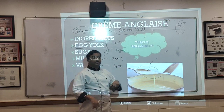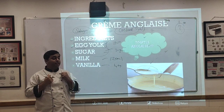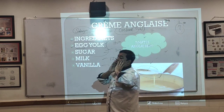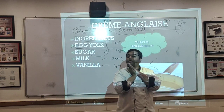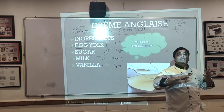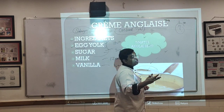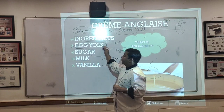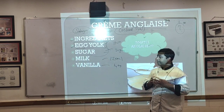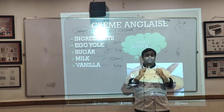Egg yolk contains phospholipid lecithin, which acts as an emulsifier. This is similar to mayonnaise — a cold emulsified mother sauce — and Hollandaise, a warm emulsified sauce. Both use egg yolk as an emulsifying agent. If you overcook the custard, the egg yolk coagulates. Remember: egg yolk coagulates at 60°C, egg white at 65°C. You want thickening, not coagulation.